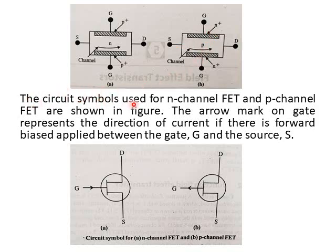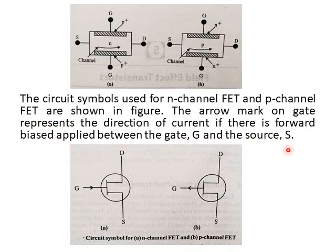The circuit symbols used for N-channel FET and P-channel FET are shown. The arrow mark on the gate represents the direction of the current if there is forward bias applied between gate G and source S.